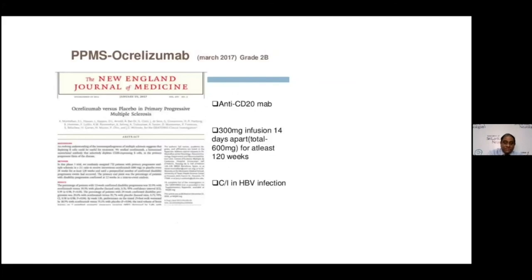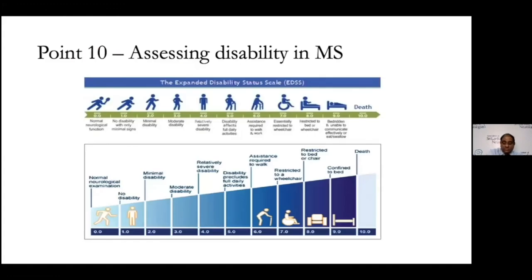For primary progressive MS, the drug ocrelizumab is now FDA approved, as mentioned. Finally, disability assessment uses the EDSS (Expanded Disability Status Scale), which ranges from 0 to 10. The EDSS score is used both at initial assessment and to monitor how patients respond to treatment over time.